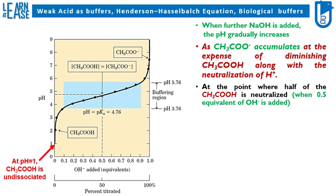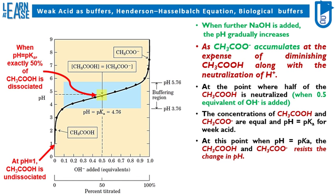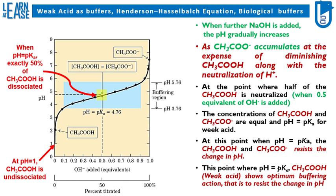At the point where half of the CH3COOH is neutralized, that is when 0.5 equivalents of OH- ions are added, the transparent yellow square spot appearing on the curve is the midpoint of the titration curve. That is when pH equals pKa, exactly 50% of CH3COOH is dissociated. At this point, CH3COOH and CH3COO- resist the change in pH. This is where CH3COOH, a weak acid, shows optimum buffering action.